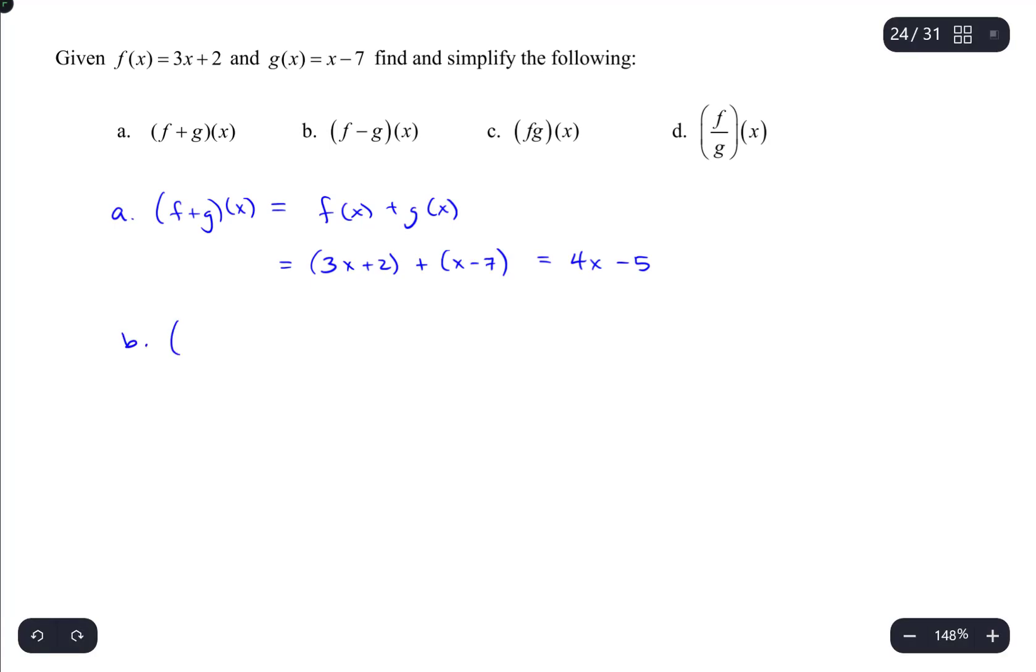For part b, determining the function (f - g)(x), we can do the same thing. We just take the individual functions and subtract them. So this would be 3x + 2 - (x - 7). And the one thing to be careful of here is to make sure that the negative distributes into this set of parentheses.